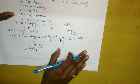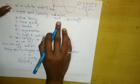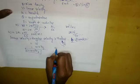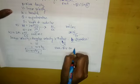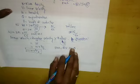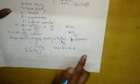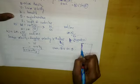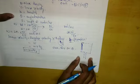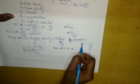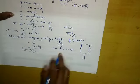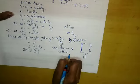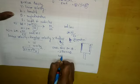Induced EMF at any instant is given by E = BLV sinθ for one conductor. In our coil there are two conductors, so for two conductors we multiply by 2: E = 2BLV sinθ.